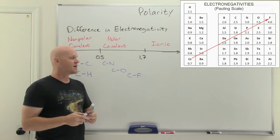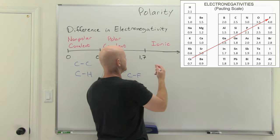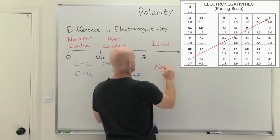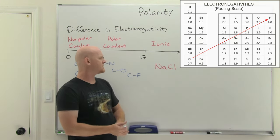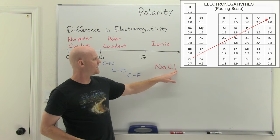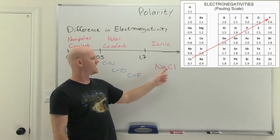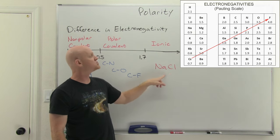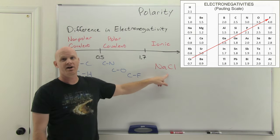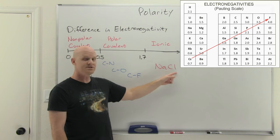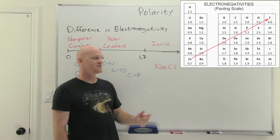Now let's go to a textbook ionic compound: sodium chloride. Looking at the Pauling scale, chlorine is at 3.0 and sodium is at 0.9 — a difference of 2.1, past that threshold, and indeed we've got an ionic bond. The bigger the difference in electronegativities, the more ionic character we say it has. And notice we've got a metal and a non-metal, which works out great.